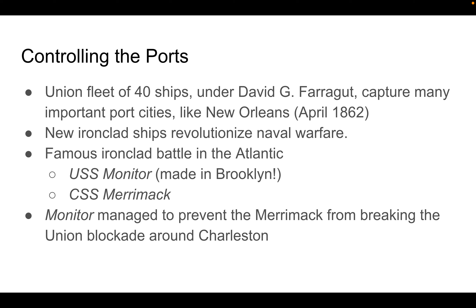Regarding the other part of the Anaconda Plan — controlling the ports — a Union fleet of 40 naval ships under David Farragut captured many port cities relatively early on, like New Orleans in April 1862. Having control of the port cities was important because the Confederacy could no longer easily get needed supplies from other nations.